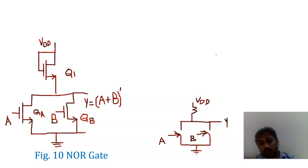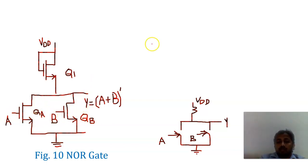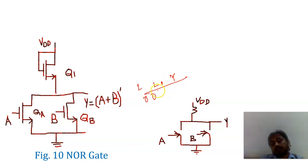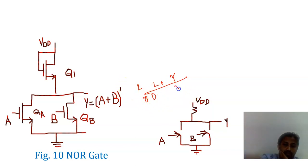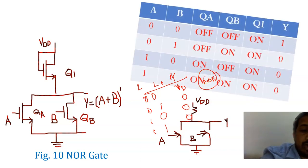Now for the NMOS NOR gate, which has two inputs connected in parallel. When A equals 0, the transistor is OFF. When input is 0,0, both transistors are OFF and output is high — that is VDD. When any one input is 1, that transistor turns ON and output becomes 0. When both inputs are 1,1, the output is also 0. This confirms NOR gate operation with the NMOS parallel configuration.